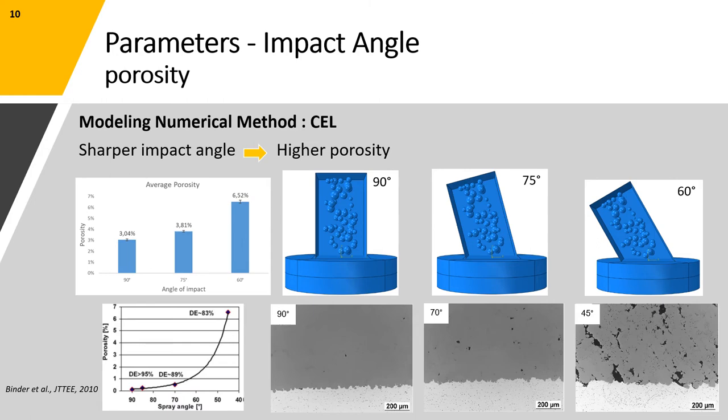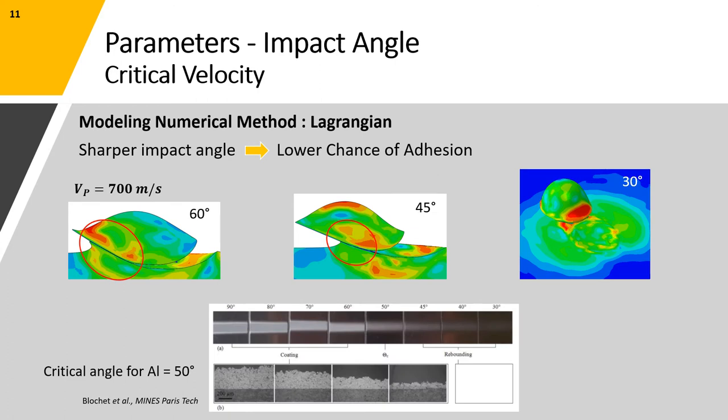As indicated in the diagram on the left, we can see an increase of about 3% in the overall average porosity when we go from 90 to 60 degrees for the angle of impact.